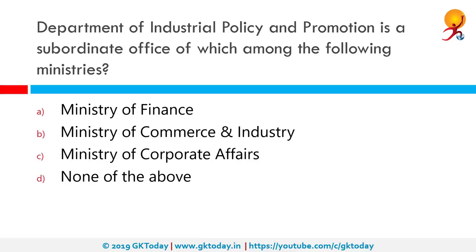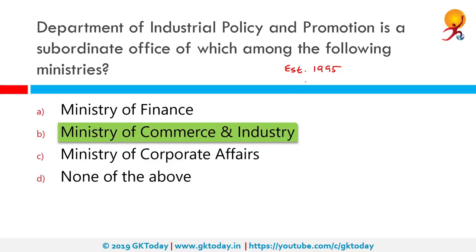The Department of Industrial Policy and Promotion is a subordinate office of which ministry? DIPP was first established in 1995, then reorganized in 2000 and merged with the Department of Industrial Development. The department falls under the Ministry of Commerce and Industry and looks at overall industrial policies, while separate departments specialize in specific allocated areas. Its main responsibility includes formulation of promotional and developmental measures to boost the industrial sector.